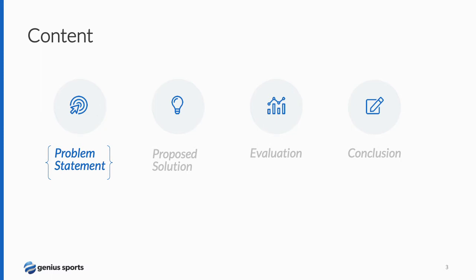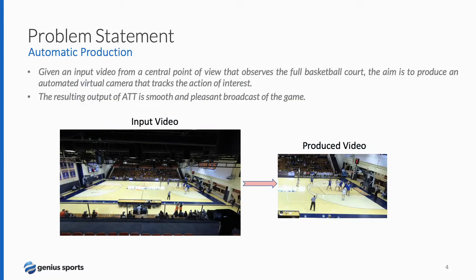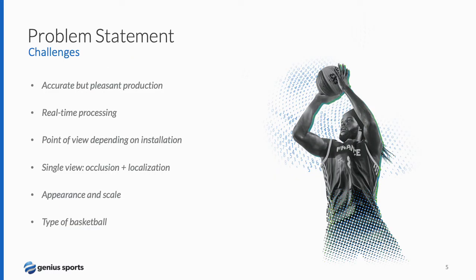Our problem corresponds to automatic video production for basketball events. Given an input video from a central single camera that is able to capture the full basketball court, our aim is to produce an automated virtual camera that tracks the action of interest at every moment. The resulting video should be a smooth and pleasing broadcast of the game. Any basketball production system should be accurate enough to track the main action of the game, but also smooth and pleasing enough to provide a good experience for the spectator.